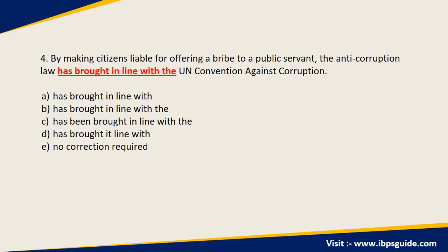Question 4: 'By making citizens liable for offering a bribe to a public servant, the anti-corruption law has brought in line with the UN Convention Against Corruption.' Let's fix the easy parts first. As we discussed earlier, the article 'the' is used when talking about something specific or unique. There is only one UN Convention Against Corruption, so 'the' has to be in the sentence. Therefore, we can eliminate options which don't have the article 'the' — which means eliminating Option A and Option D. That leaves us with B and C.